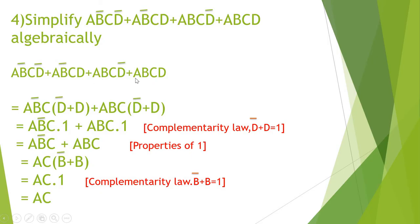For the third and fourth terms, ABCD̄ and ABCD, the common factor is ABC. Taking ABC outside gives ABC into D̄ plus D. What is the value of D̄ plus D? By the complementarity law, a variable combined with its complement equals 1, so D̄ plus D equals 1. Substituting: AB̄C dot 1 equals AB̄C, and ABC dot 1 equals ABC, by properties of 1.